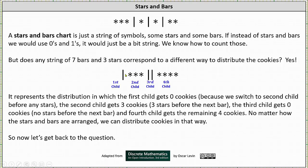Here's another sequence of stars and bars that represents a different way to give out the seven cookies. It represents a distribution in which the first child gets zero cookies because we switch to the second child before any stars. The second child gets three cookies. Then we switch to the third child, but then we switch again to the fourth child indicating the third child gets zero cookies, and the fourth child gets the remaining four cookies.